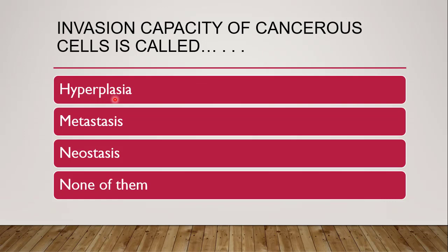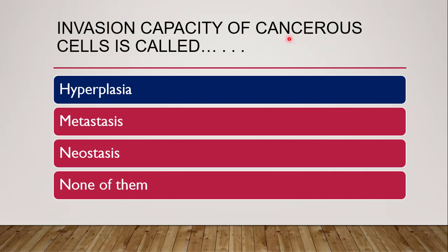Next question: invasion capacity of cancerous cells is called — hyperplasia, metastasis, neostasis, or all of them? The correct answer is hyperplasia. Hyperplasia refers to the invading capacity of the cancerous cell, whereas metastasis refers to the spreading capacity.